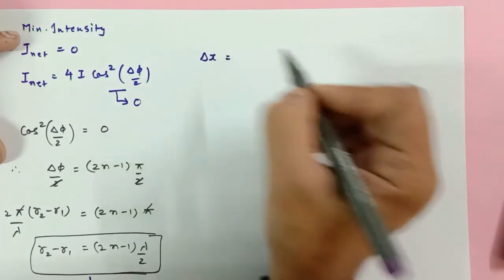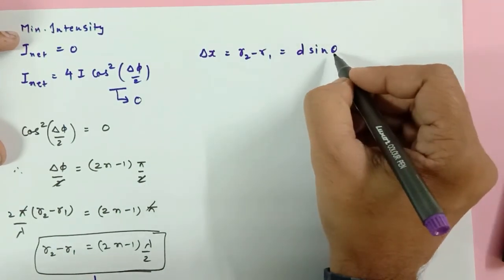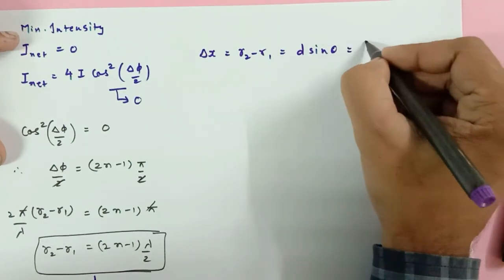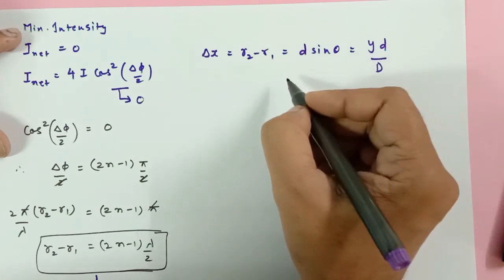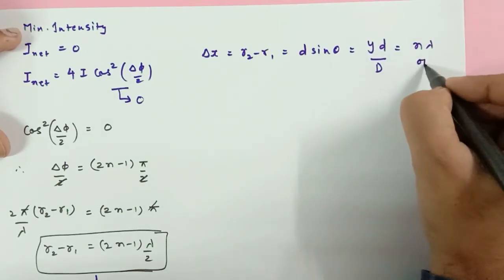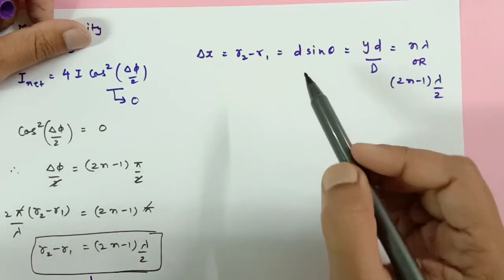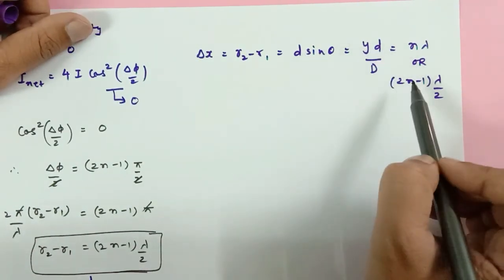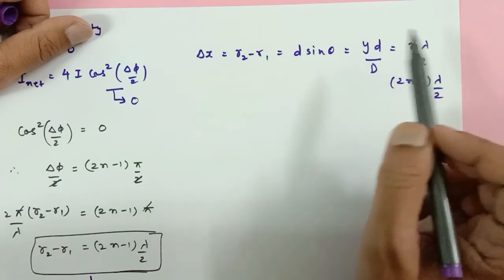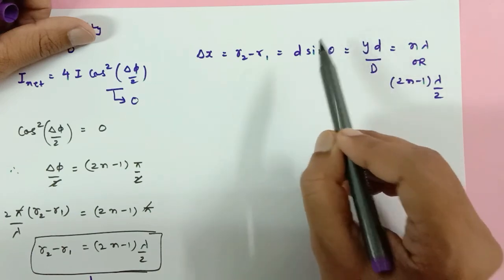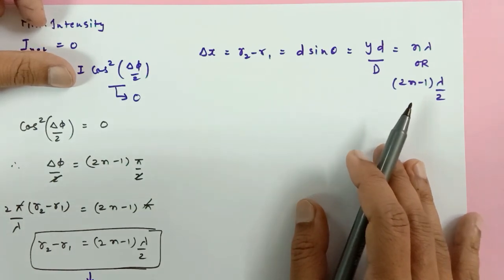In summary, the path difference delta x equals r2 − r1, which also equals d·sin(theta) — where theta is the angular position — and also equals y·d/D, where D is the screen-to-slit distance and d is the slit separation. This can equal nλ for bright fringes or (2n−1)λ/2 for dark fringes. Depending on the question, you select and equate the appropriate expressions. Hopefully you've enjoyed the explanation — please subscribe to the channel and thank you for watching!